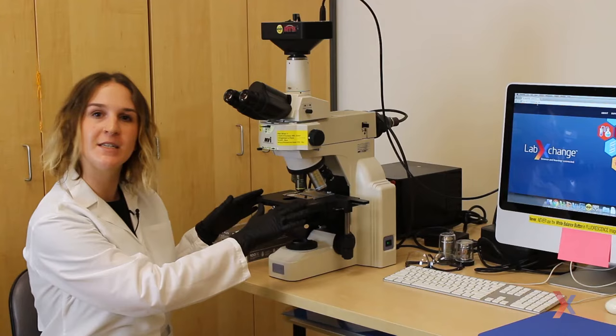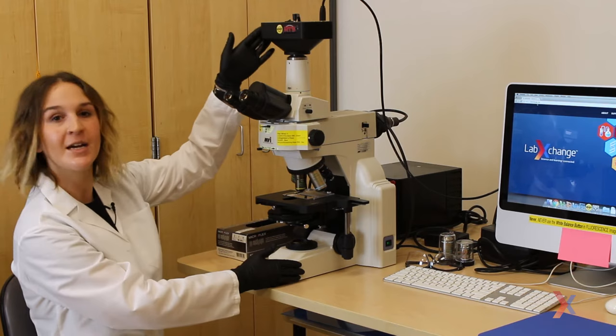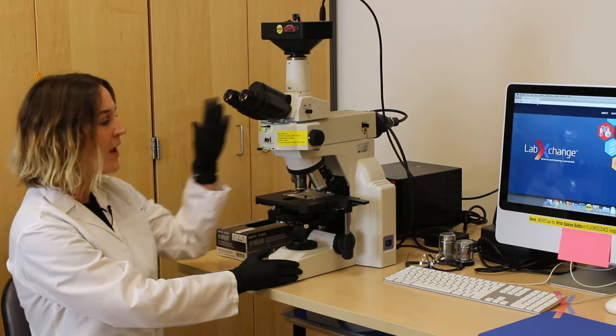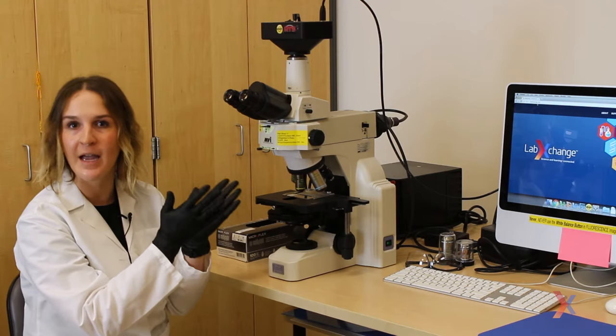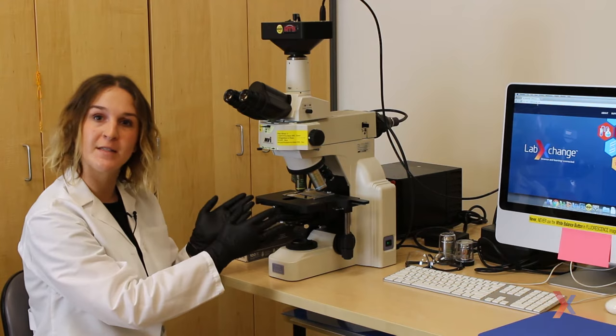We'll put our slide first on the stage and this stage is sitting in between our light source at the bottom here and our detector at the top which is our camera or it could also be your eyes if you look through the eyepiece. And we have a few elements in between our light source and our camera that help us direct the light where we want it to go.